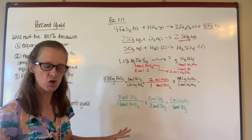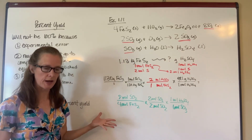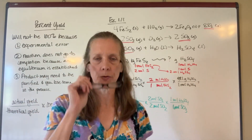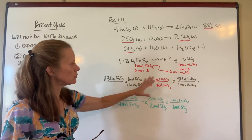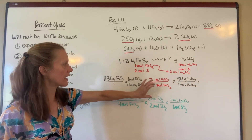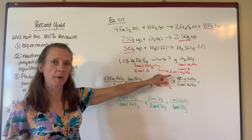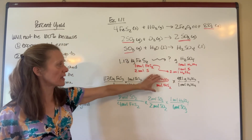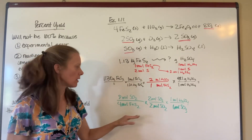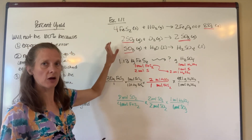Both methods work and they give you the same thing in the end. When you set your problem up, you're either going to use the multiple conversion we reasoned through based on how much sulfur was present, or you can chain through the green method going from moles in the first reaction to the second reaction to the third reaction.